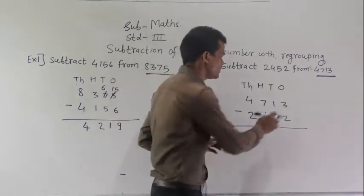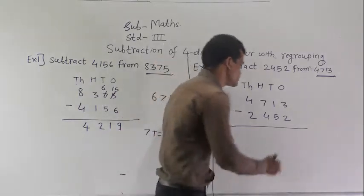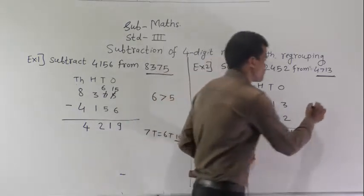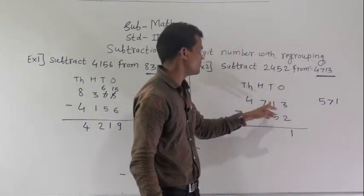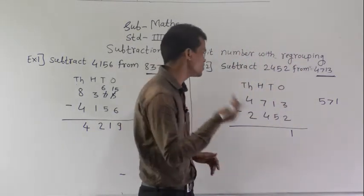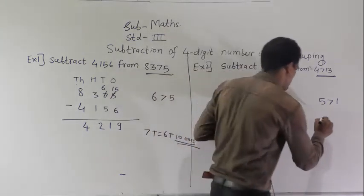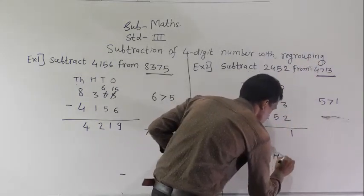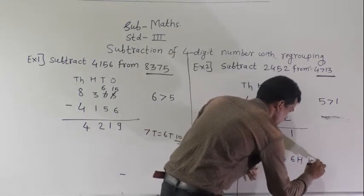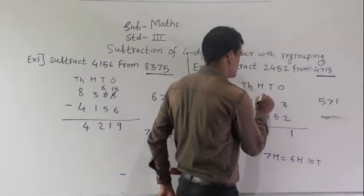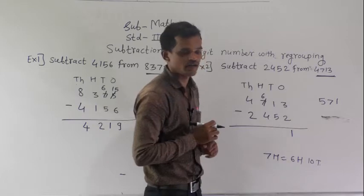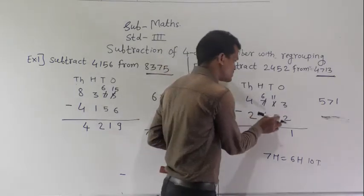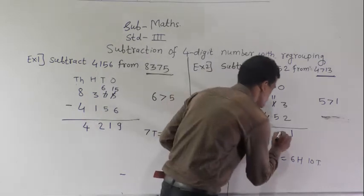Start from the ones place. 3 minus 2 equals 1 — write 1 under the ones column. Then 1 minus 5: here 5 is greater than 1, so 1 minus 5 is not possible. Regroup this 700. 700 is equal to 600 and 10 tens. Write 6 here and add those 10 tens to this 1 ten, so 10 plus 1 equals 11 tens.